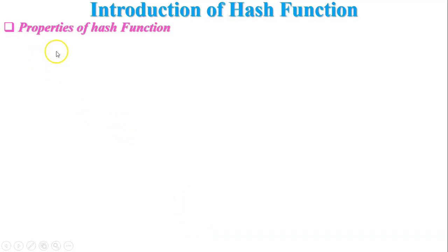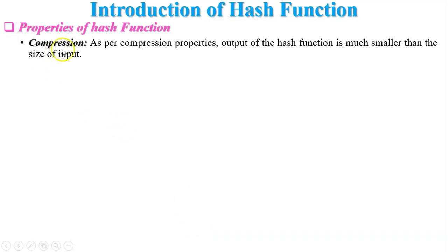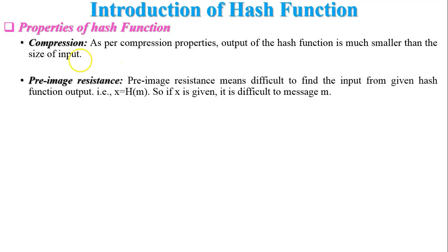Now, the properties of hash functions. First property: compression. The input is variable length, but a fixed size hash value is produced. As per the compression property, the output of the hash function is much smaller than the size of the input — for example, if the input size is 1024 bits and you are using SHA-1, a 160-bit hash value is generated.